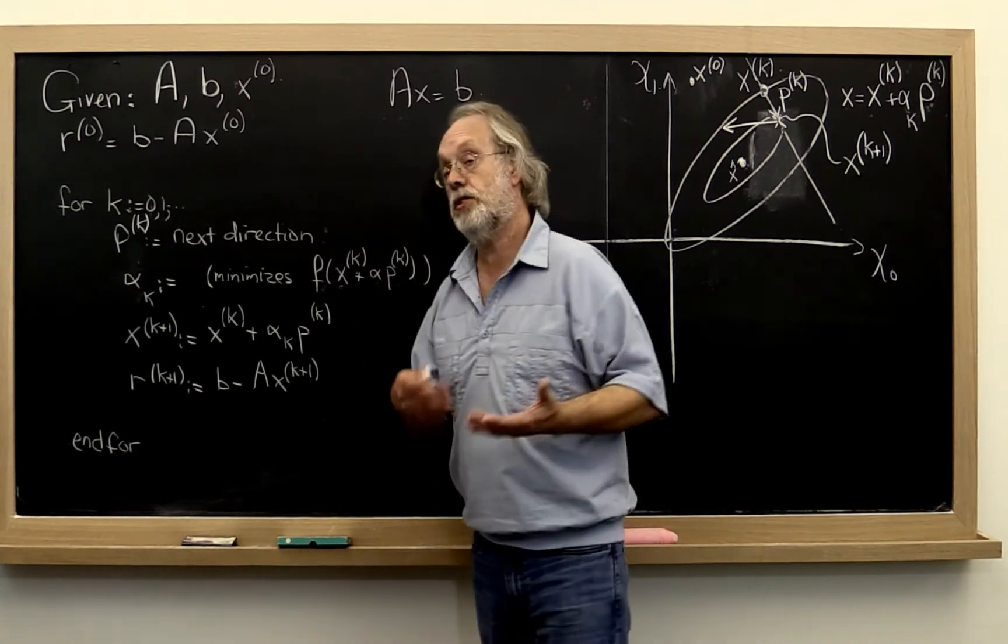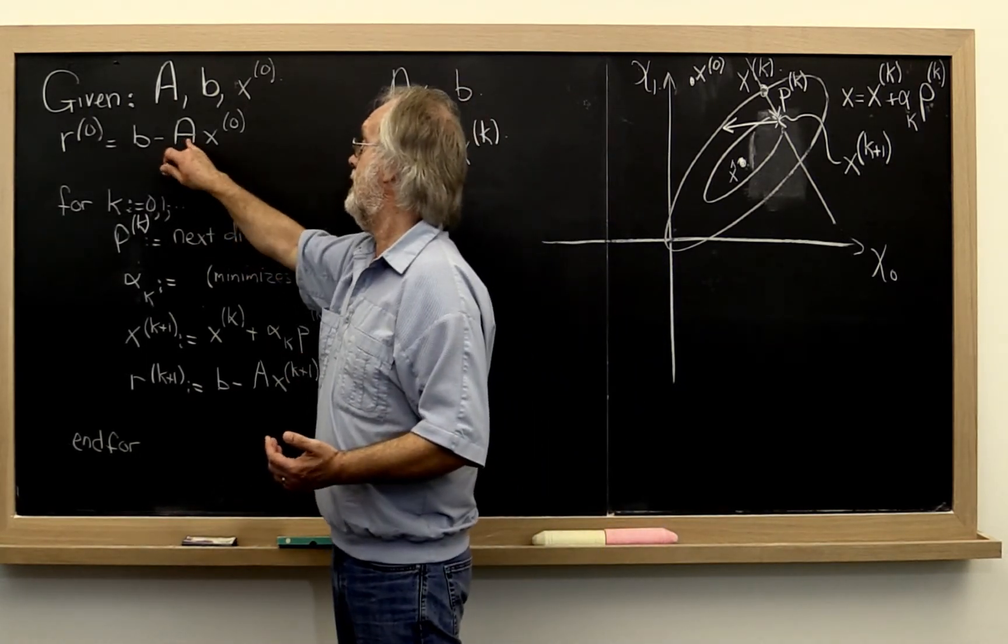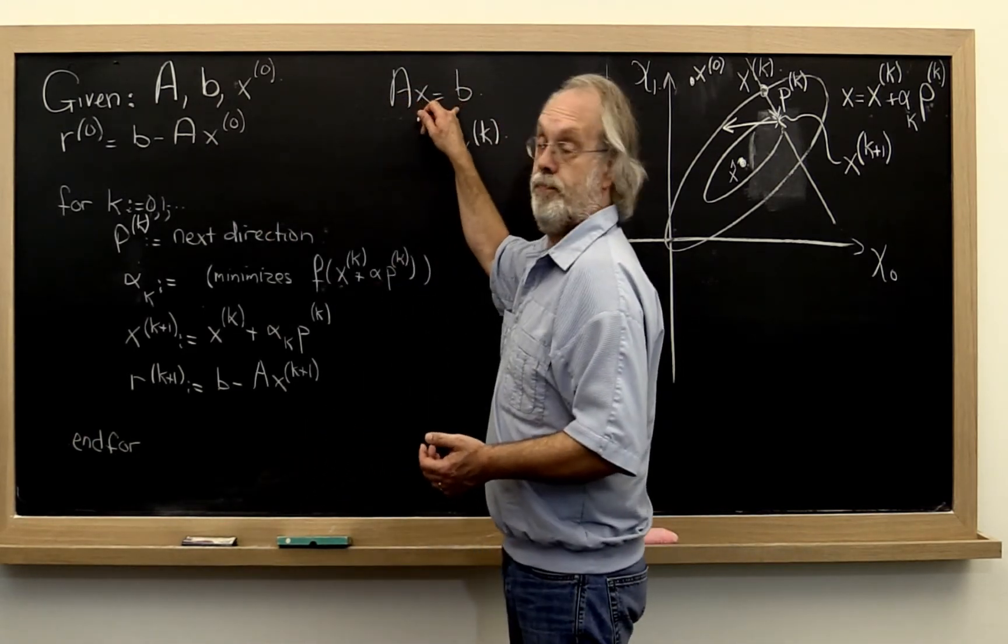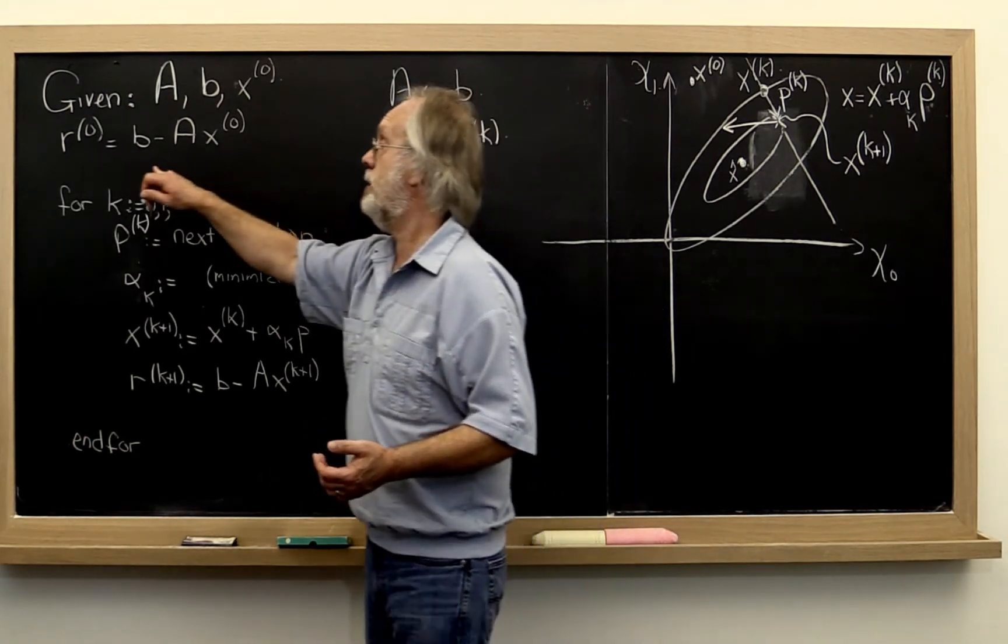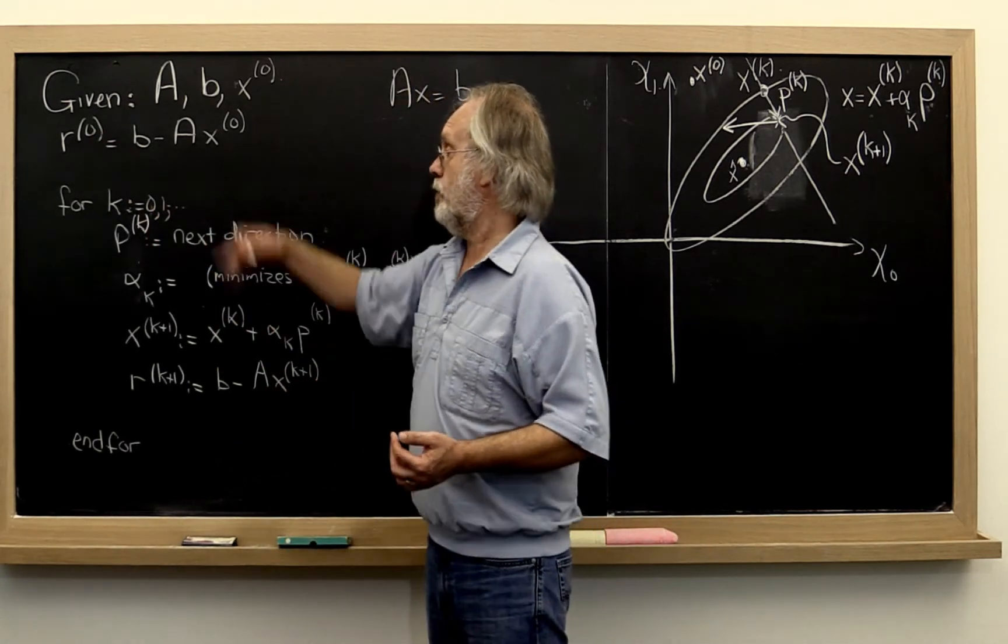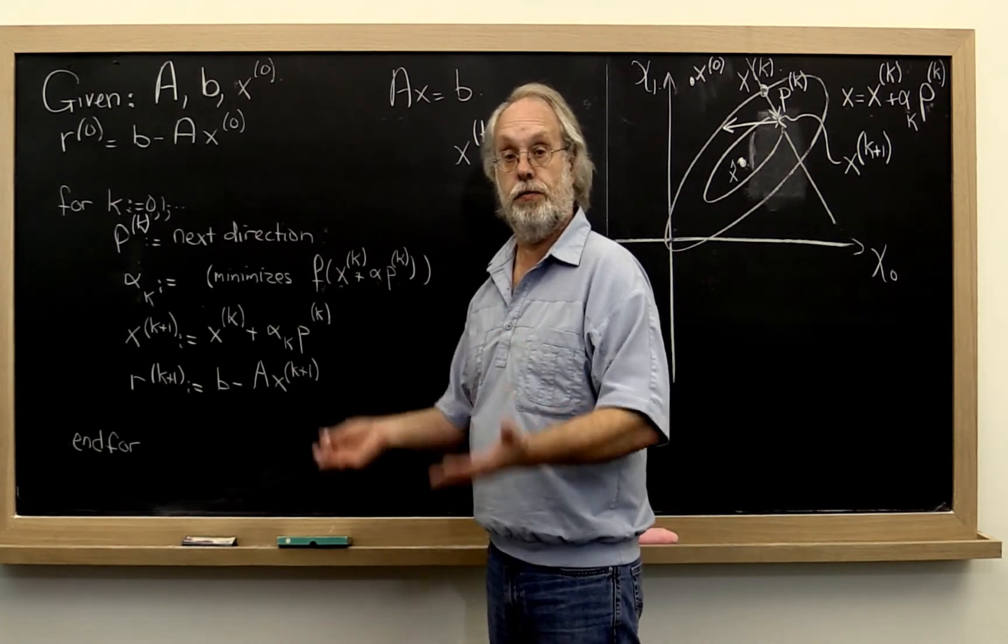Now it turns out it's also important to keep track of the residual. Remember the residual is B minus A times an approximation to the solution Ax equals B. So we are going to keep track of those as well. Now then we start iterating. We create x₁ from x₀ and then x₂ from x₁ and so forth.